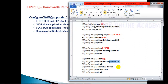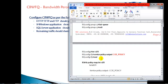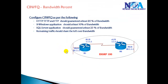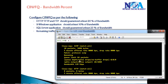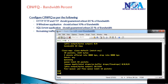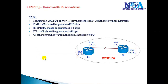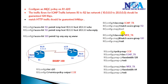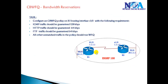There are two configuration options — absolute bandwidth values or percentages — and the interface application process is the same for both. The workbook contains three documented labs. The implementation always follows the same pattern: create a class map, define what traffic to match, then inside the policy map define the guaranteed bandwidth.